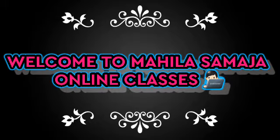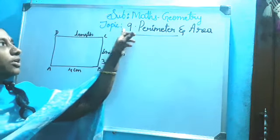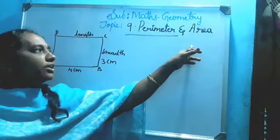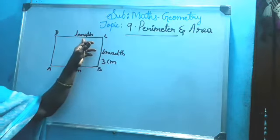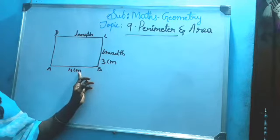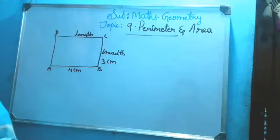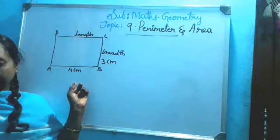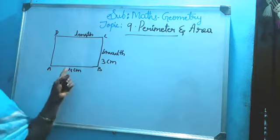Dear children, today let us learn Chapter 9: Perimeter and Area. See, it is a plane figure. It has two dimensions: one is length and another one is breadth. The length measurement is 4 cm, breadth measurement is 3 cm.